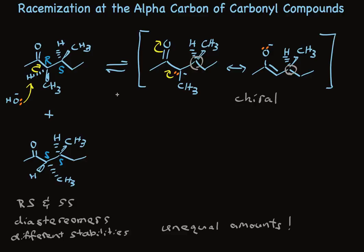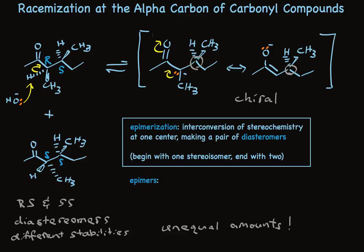The protonation will occur from one side or the other preferentially. We're not making a racemic mixture anymore. That would be an equal mixture of R and S. We're making a mixture of two diastereomers. This is a process that's called epimerization. Epimers are diastereomers that differ at one center.